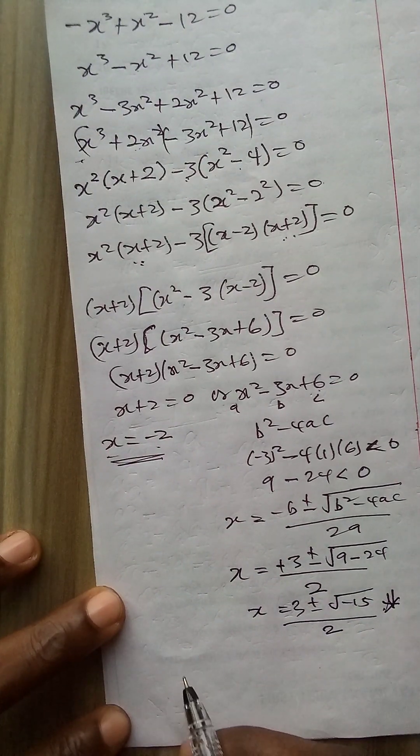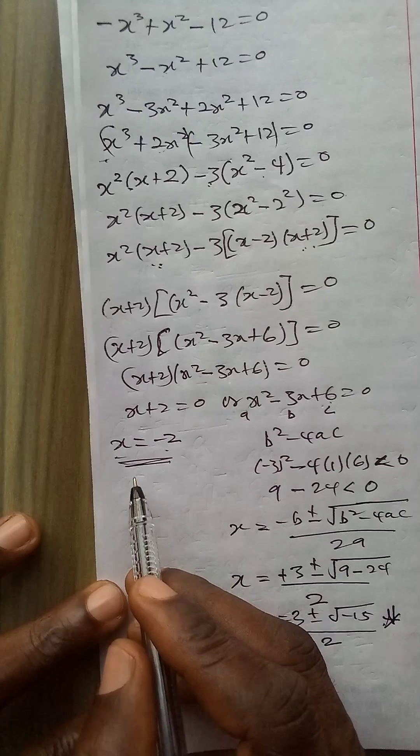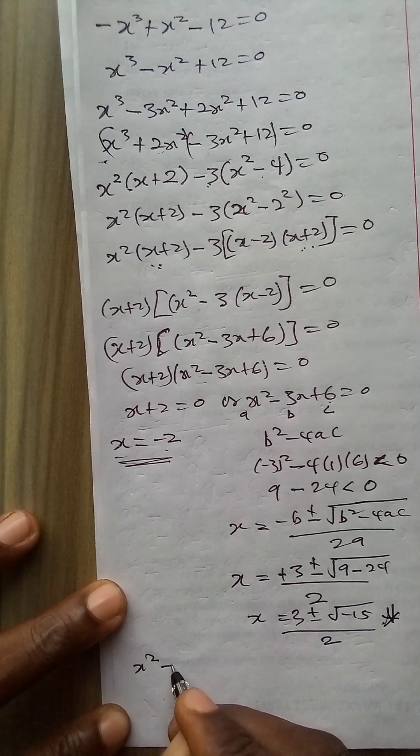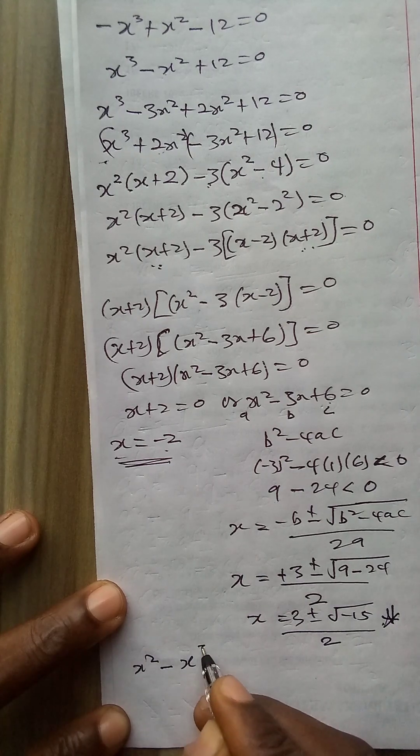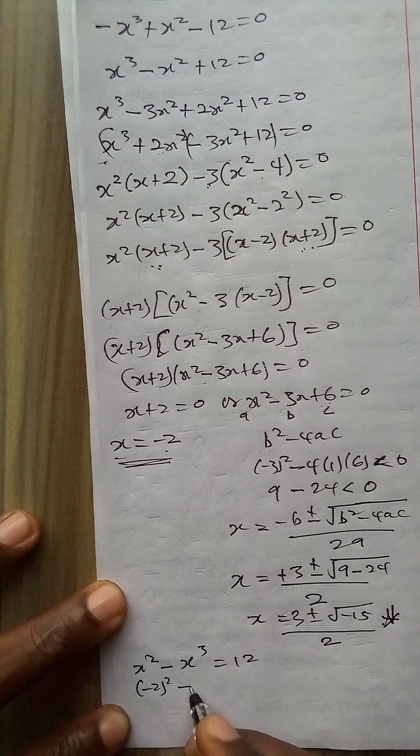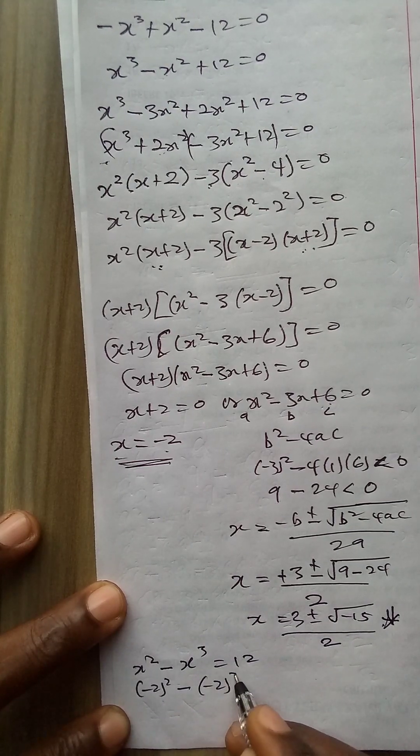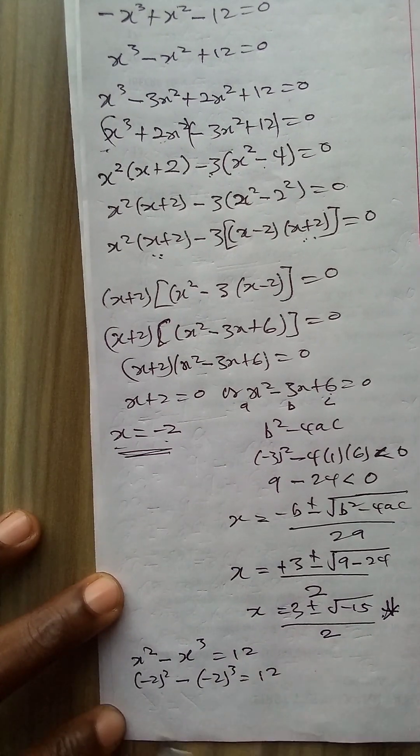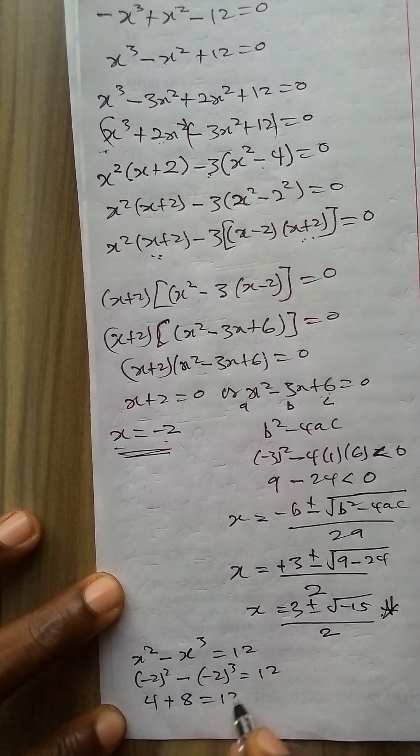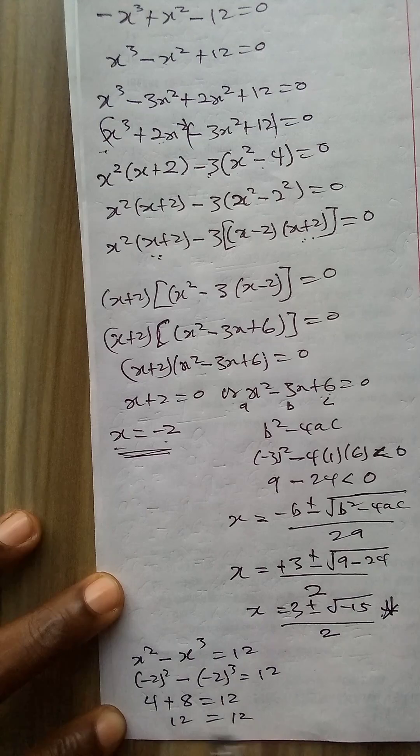So let me cross check if my answer which is x equals minus 2 is correct. I have x squared minus x to power 3 equals 12. So this is minus 2 squared minus minus 2 cube equals 12. Yes, this is 4 plus 8 equals 12. Therefore, x equals minus 2.